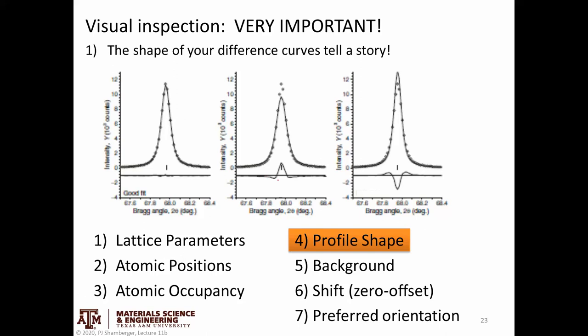I call these patterns W's or M's in the difference curve — an oscillating pattern of down-up-down or up-down-up. These are indicators that your peak shape is not quite right: you're overestimating the observed data here, underestimating it there, then overestimating again — meaning your peak is a little too wide or a little too narrow. From the instrument side, there are a number of instrumental parameters. When we talk about U, V, W, X, and Y, these are parameters that define the function we use to fit peaks. Things like grain size or residual strain in the material can also affect peak shapes.